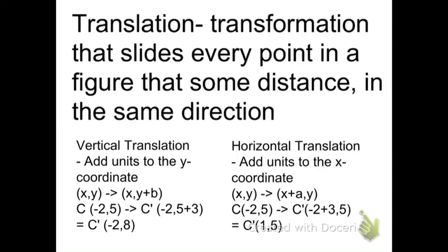Translation is a transformation that slides every point in a figure some distance in the same direction. Vertical translation is when you move up and down — add units to the y coordinate, so a point (x, y) becomes (x, y + b). For horizontal translation, you move left and right — add units to the x coordinate, so a point (x, y) becomes (x + a, y).